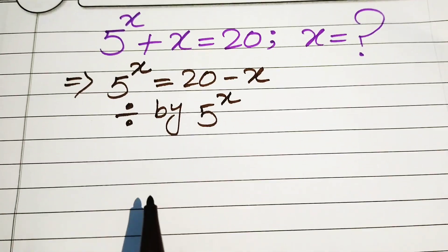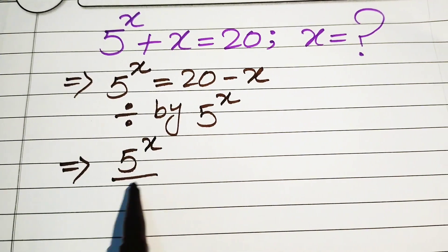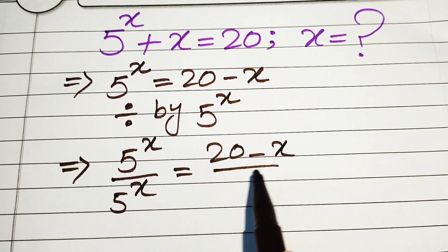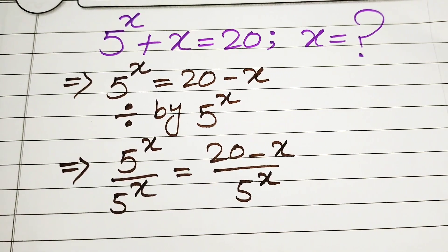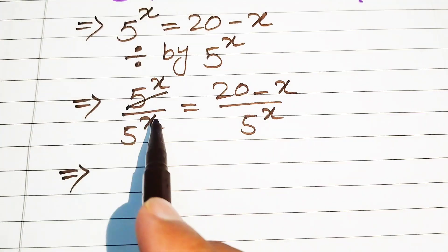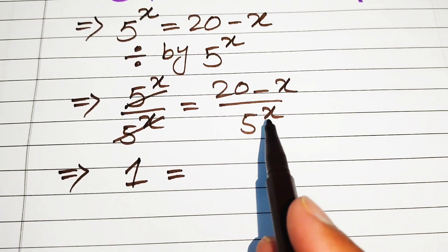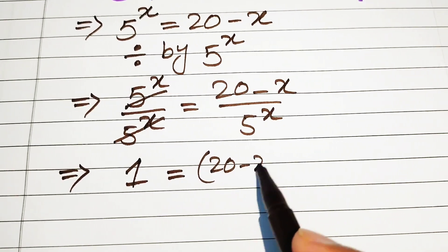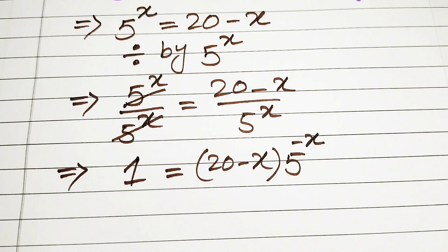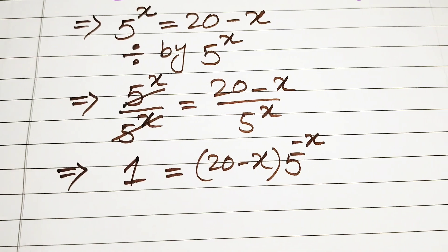When we divide both sides by 5 to the power of x, it will be written as 5 to the power of x divided by 5 to the power of x equals 20 minus x divided by 5 to the power of x. After simplification, this cancels out and we get 1 equals 20 minus x into 5 to the power of minus x, since moving 5 to the power of x upside makes its exponent negative.